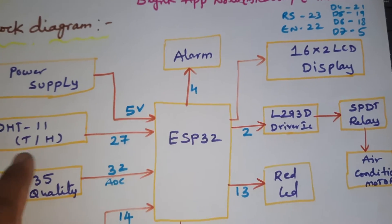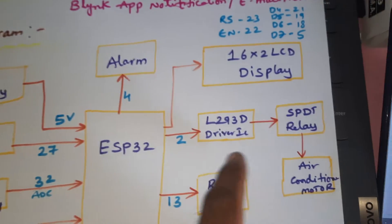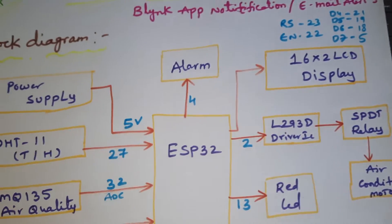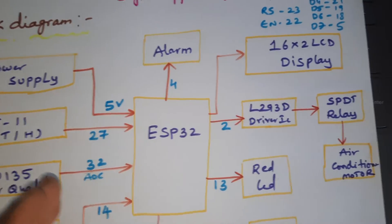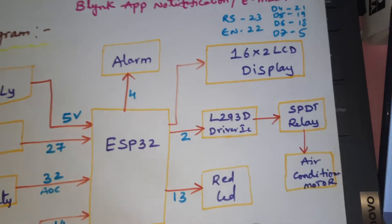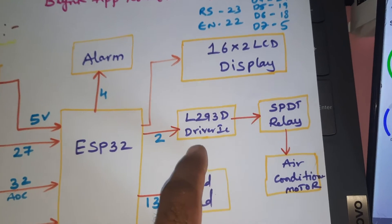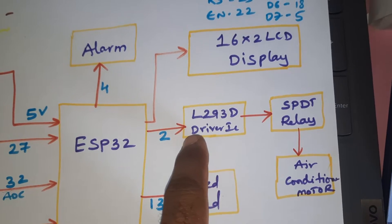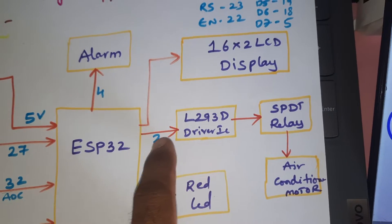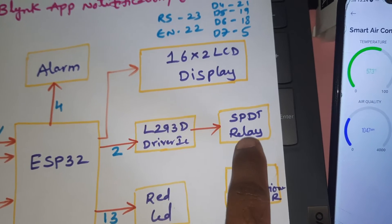If temperature is low, the fan should not turn on. The cutoff temperature value is 40 degrees — only if temperature exceeds 40 will the air conditioner activate. We are using an L293D quadruple H-bridge driver IC to drive the DC motor.